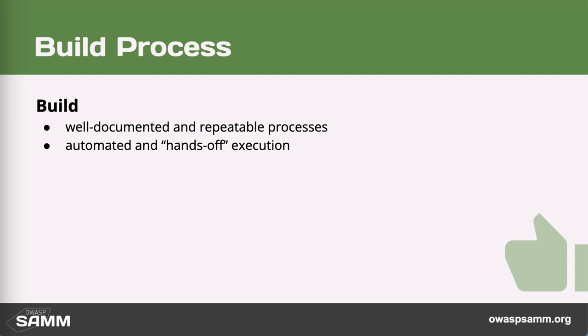What you're also looking for is build execution to be as hands-off as possible. Ideally, as soon as the pull request is merged, the build just starts. It is very important that the build process itself cannot be modified — you want to secure the build tools from modification. You shouldn't need to worry about unauthorized execution of the build.